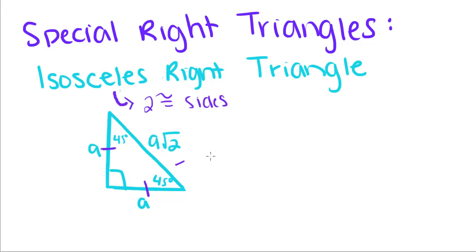Their hypotenuse, which is across from the right angle, is equal to that side times the square root of 2. So that means that this length is A square root of 2.